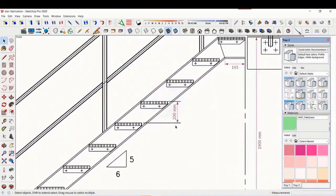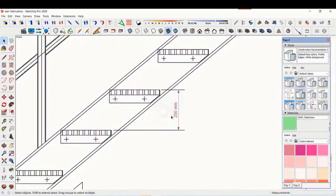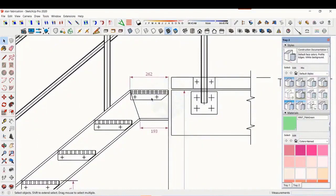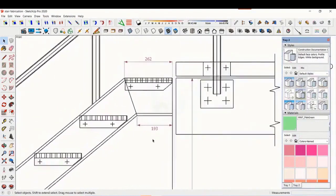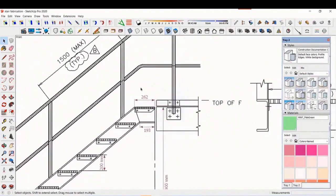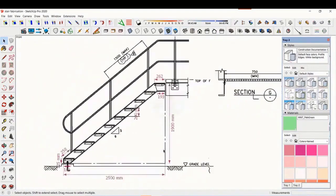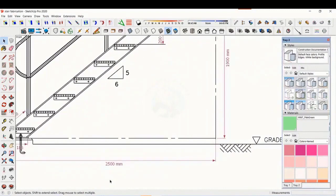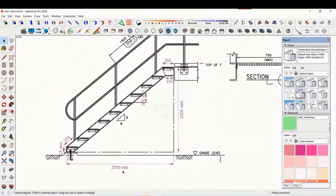The basic structure is made from ISMC 200. The height of the staircase is 1900 mm and the length is 2500 mm. The width of the staircase is 750 mm.